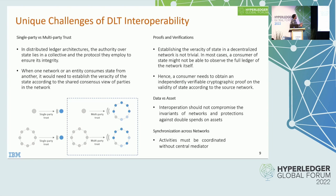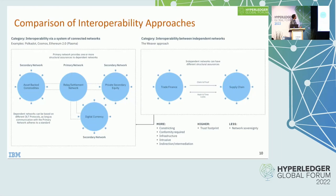There are unique challenges we face for DLT interoperability that we don't face in traditional centralized service interoperability. The authority over state lies in a collective, enforced by a consensus protocol. In a multi-party network, you have to trust information coming from that network — you can't boil it down to trusting a single peer, because a single peer can always lie. The foreign network doesn't participate in the consensus protocol of a given network, and that's the real challenge.